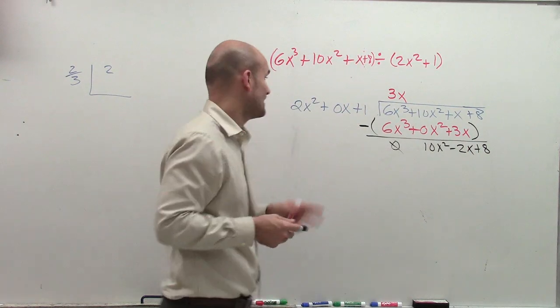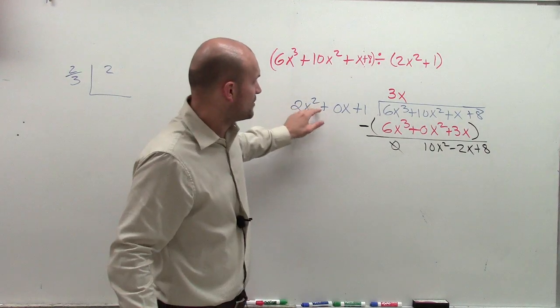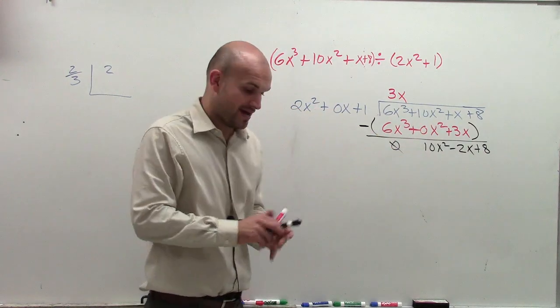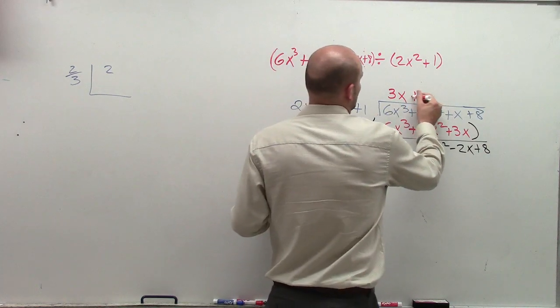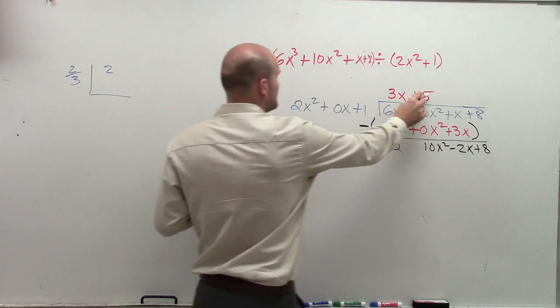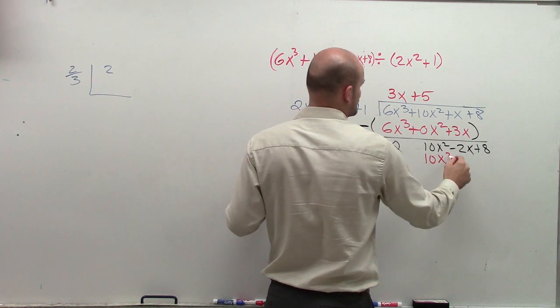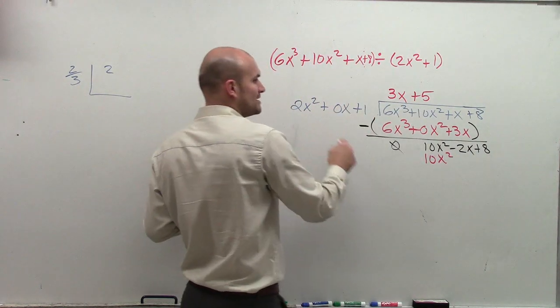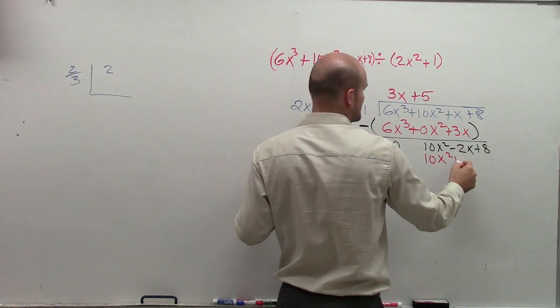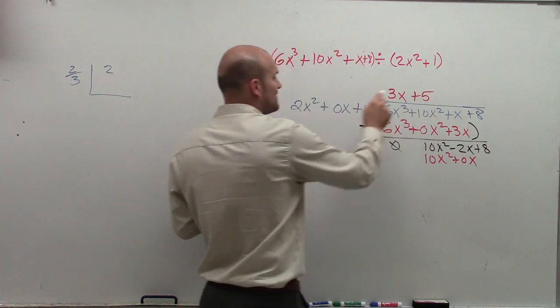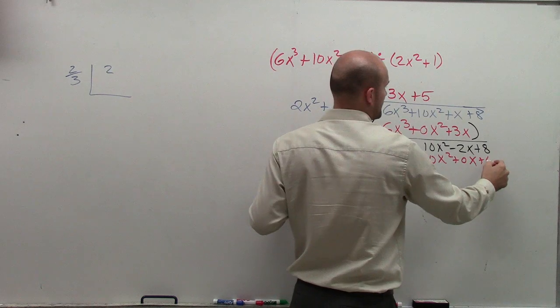OK, so now we go back again and we do it again. 2x squared divides into 10x squared, and that goes in there 5 times. So I'm going to write plus 5. Then I do 5 times 2x squared, which is 10x squared. 5 times 0x, which is again going to give us 0x, and 5 times 1, which is 5.